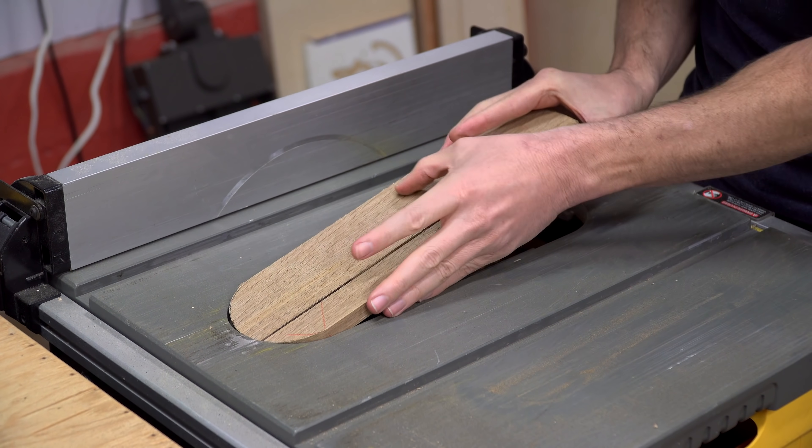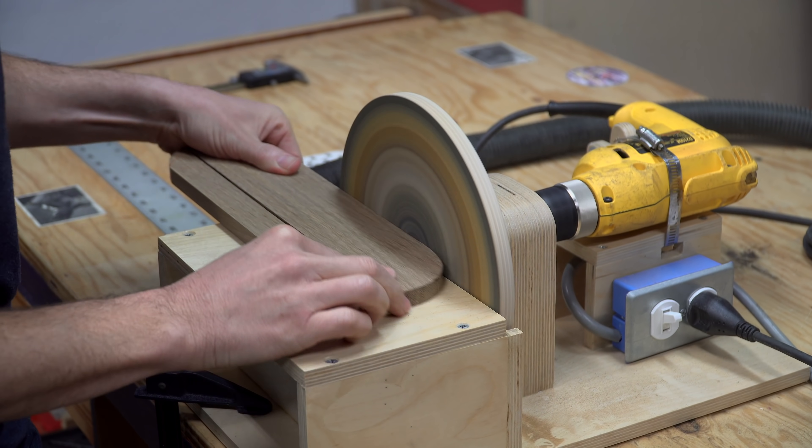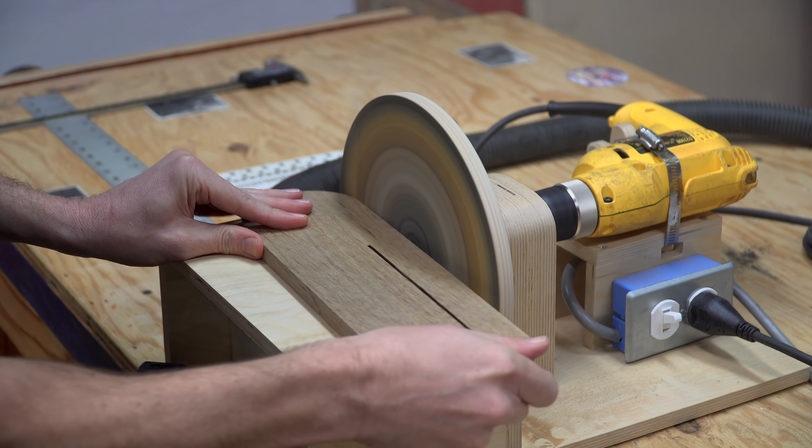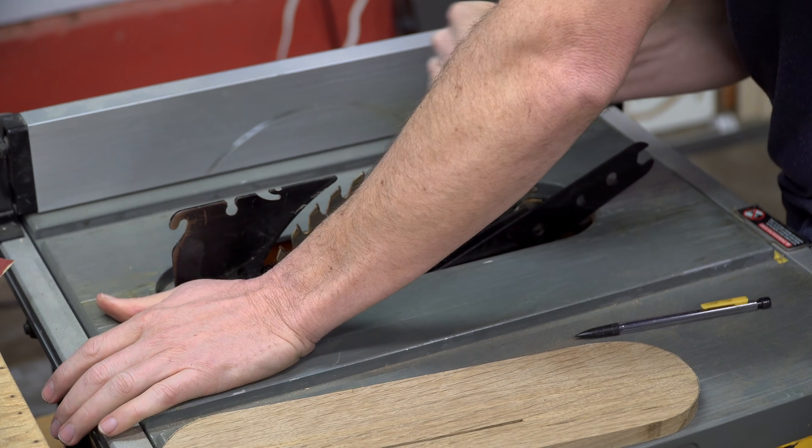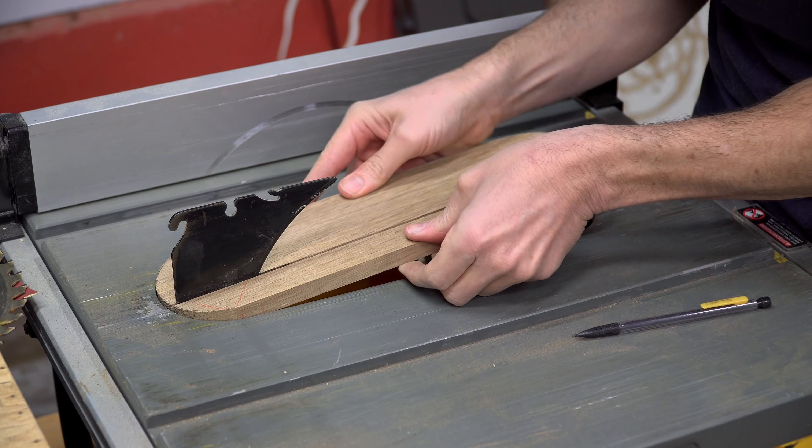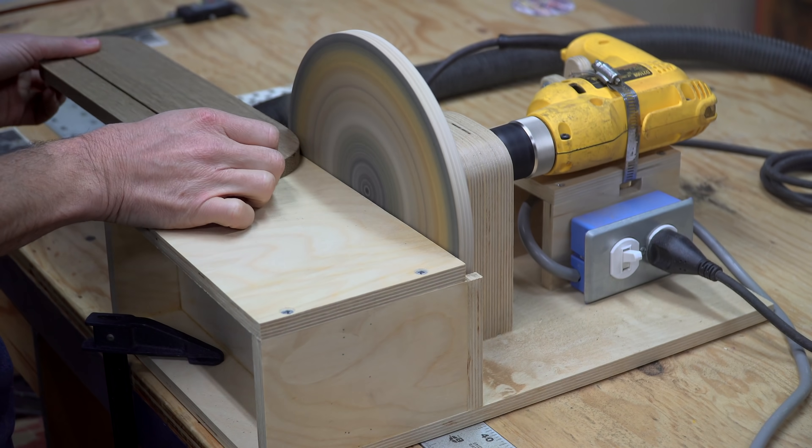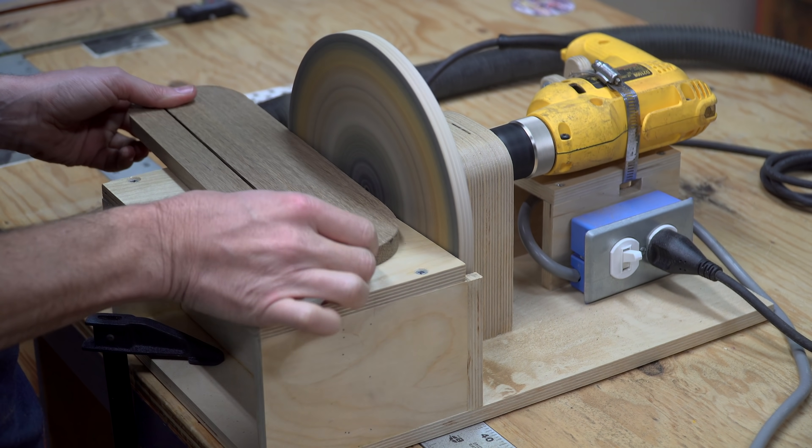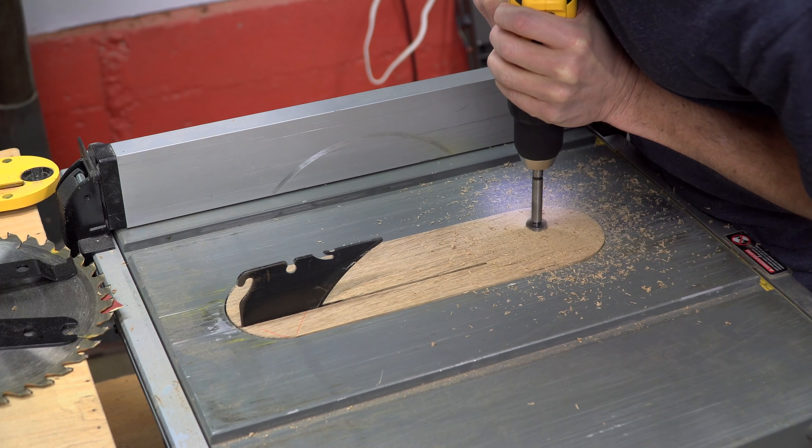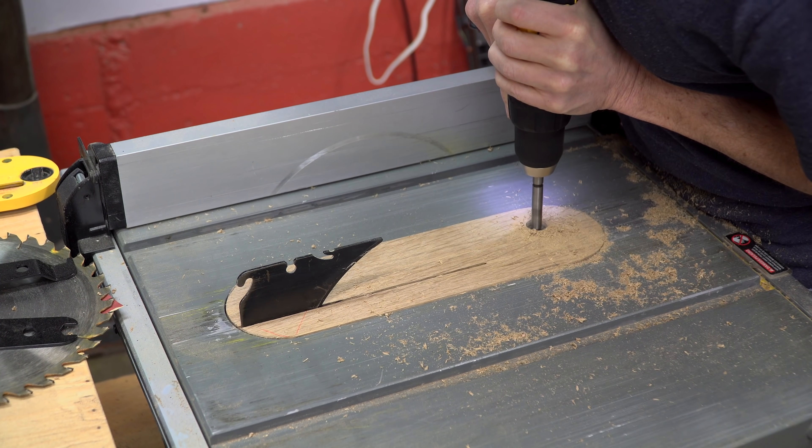The insert was a bit too snug, so I just kind of went back and forth between the table saw and the disc sander until I got it right. Then when I finally got it to fit, I drilled a hole so I could get it out.